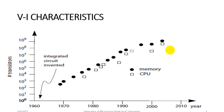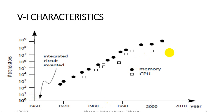Now let us go to the VI characteristics. Here you can see the integrated circuit with transistors at various levels. As the year increases, the transistor count is also getting increased.